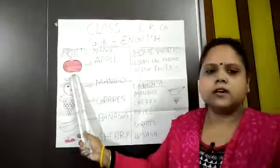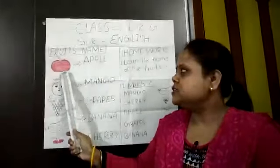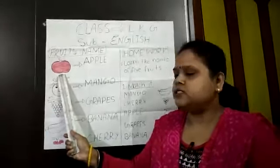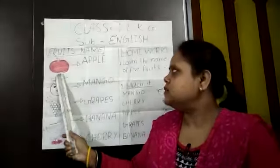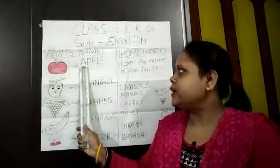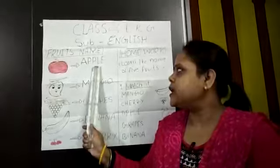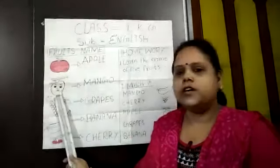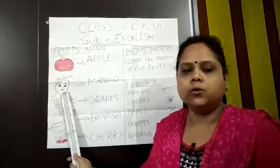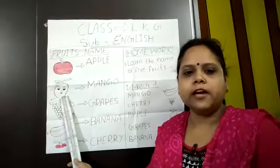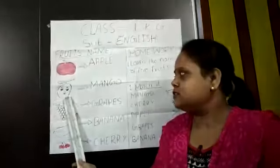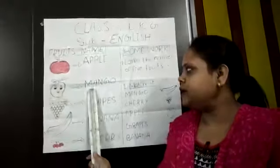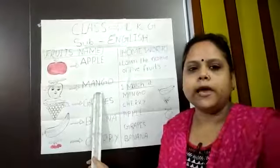First one is Apple. See this picture? This is an Apple and the spelling is A-P-P-L-E. Apple. Next one is Mango. Everybody likes Mango? The spelling of Mango is M-A-N-G-O. Mango.